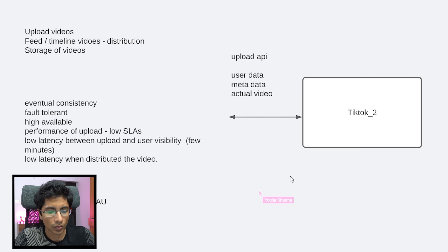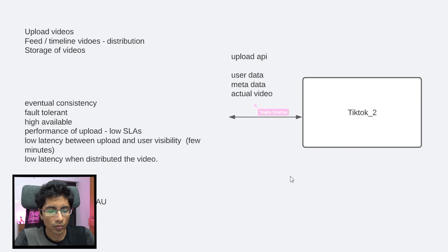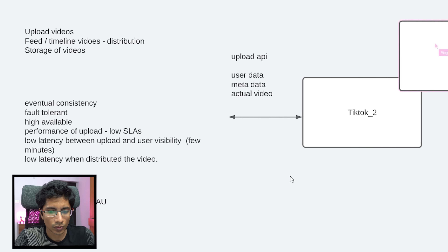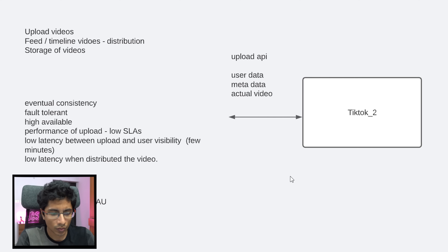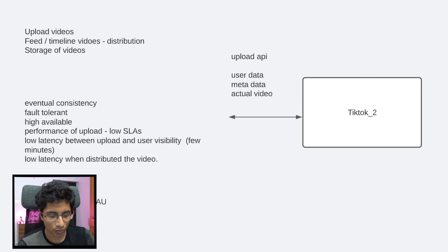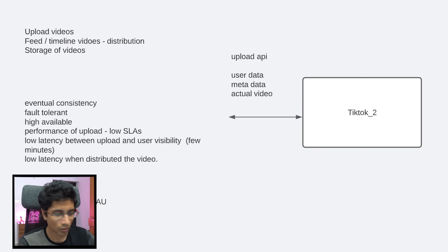This upload API is going to take the videos and then once the creator uploads the videos, we are going to have some kind of storage for videos — I will just write video storage here. Now coming to the choice of storage, there are three different kinds of data that we have to store.